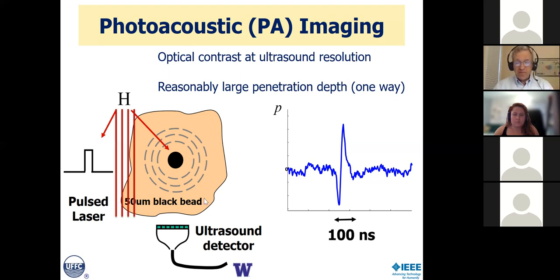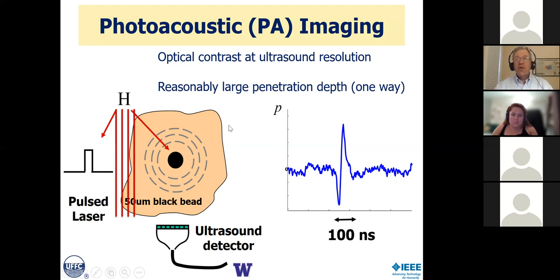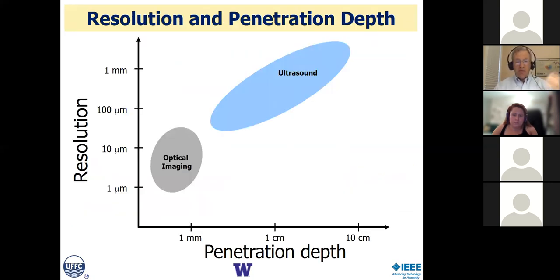This does two things. First, it provides optical contrast — the brightness you see in the image is optical. But it's at ultrasound resolution because the imaging format is acoustic. It allows you to overcome a fundamental limit of optical imaging in the body: penetration depth. Because we do not need coherence of the light source, we simply need time modulation and light diffusion within the object, giving us large penetration depth for optical probing deep inside the body. This technology, dubbed photoacoustic imaging, bridges the worlds of traditional medical ultrasound and optical imaging.